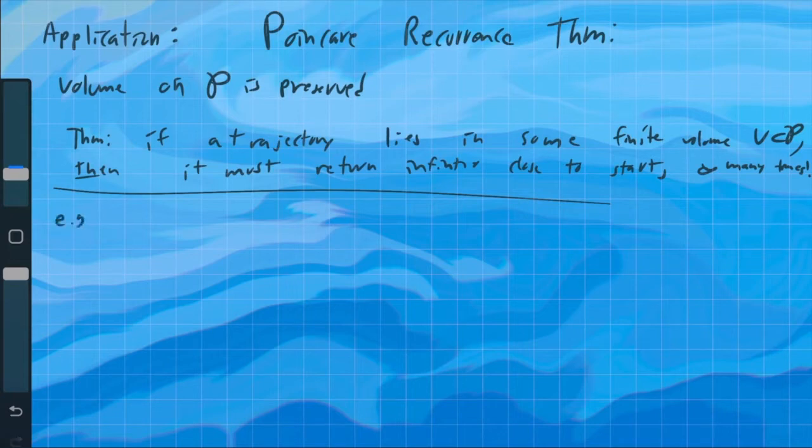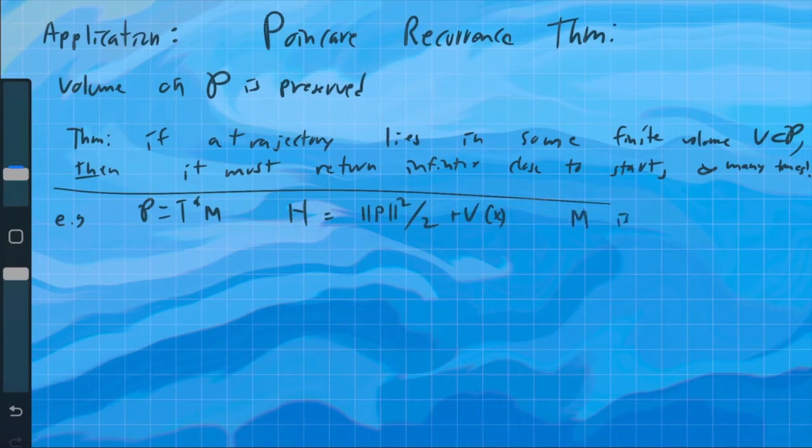So for example, let's just take phase space as the cotangent space of a manifold, and then let's define our Hamiltonian as a standard kinetic plus potential Hamiltonian. So we have our momentum squared, and then our potential. And let's say that M is finite volume.